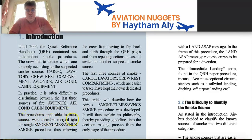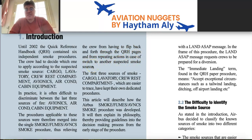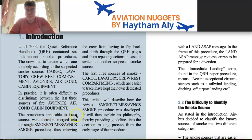Because it was difficult to discriminate between these smoke sources, the procedures applicable to avionics, air conditioning bay, and cabin equipment were merged into a single Smoke Fumes and Avionics Smoke procedure. This relieved the crew from having to flip back and forth through the QRH and from repeating actions when switching to another suspected smoke source. Cargo, crew rest compartment, and lavatory kept their own dedicated procedures.